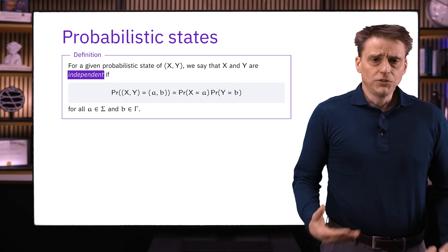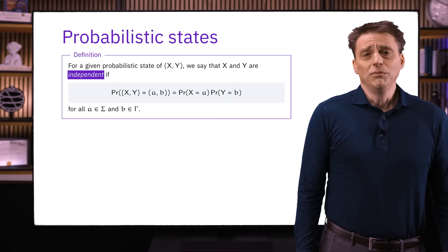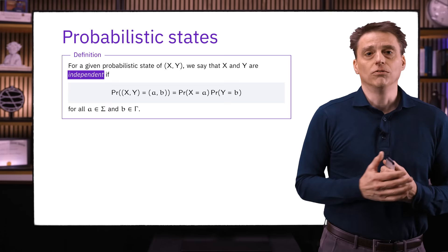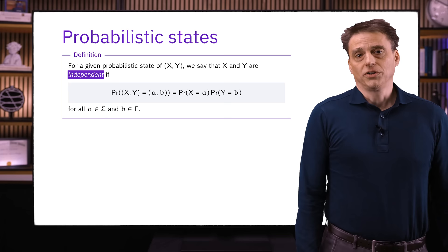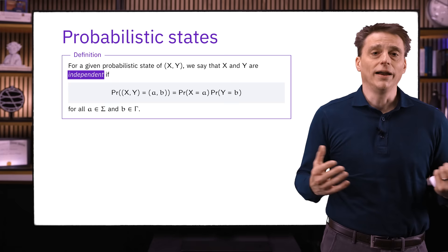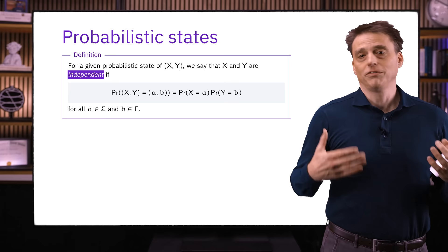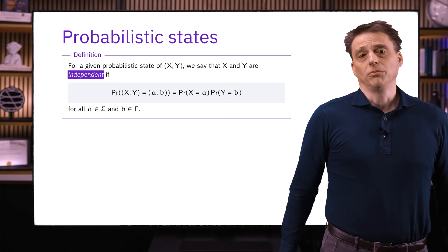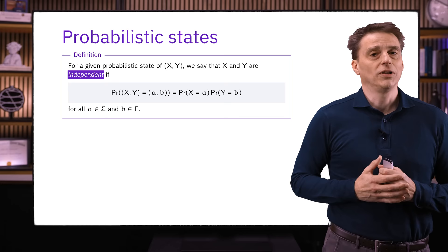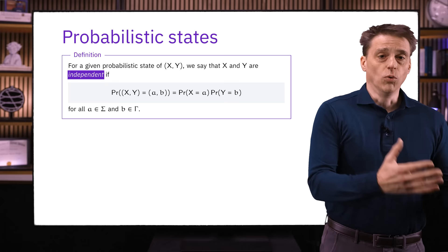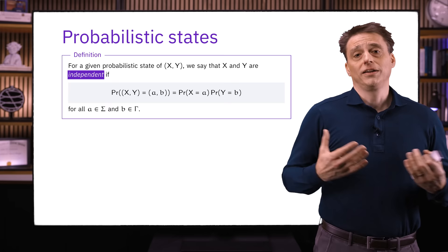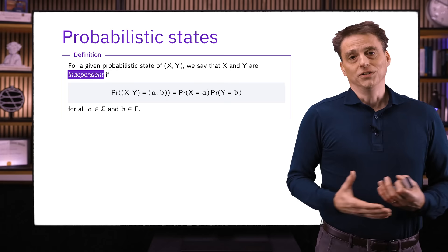If we have two systems X and Y with some probabilistic state of X, Y in mind, we say that X and Y are independent if, for every choice of classical states A and B of X and Y, the joint probability equals the product of the individual probabilities. One way to interpret this: the probability for X to be in any one classical state has nothing to do with the probability for Y to be in some state. Learning what state one system is in doesn't affect the probabilities for the other system. If one person flips a coin and another in a different room rolls a die, the formula for getting probabilities for combinations of states is exactly this independence condition.